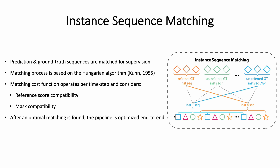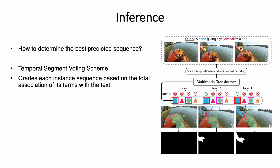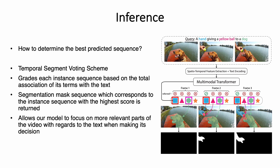After an optimal matching is found, the whole pipeline is optimized end-to-end. During inference, we need to determine which of the predicted sequences is most strongly associated with the text — is it the blue square sequence, the green circle sequence, or perhaps some other sequence? For this, MTTR employs a novel reasoning scheme called the temporal segment scoring scheme. This scheme scores each instance sequence based on the total association of its frames with the text. Finally, the segmentation mask sequence corresponding to the instance sequence with the highest score is returned. This scheme allows our model to focus on more relevant parts of the video with regards to the text when making its decision.